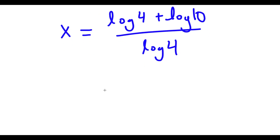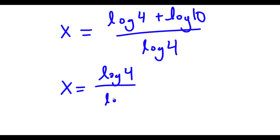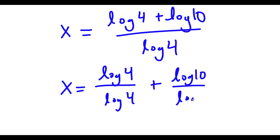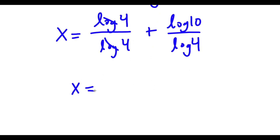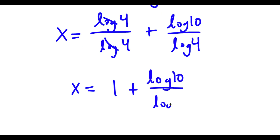Now, log 4 plus log 10 over log 4 is the same thing as log 4 over log 4 plus log 10 over log 4. And log 4 over log 4 — these two cancel out. So now I have x is equal to 1 plus log 10 over log 4.